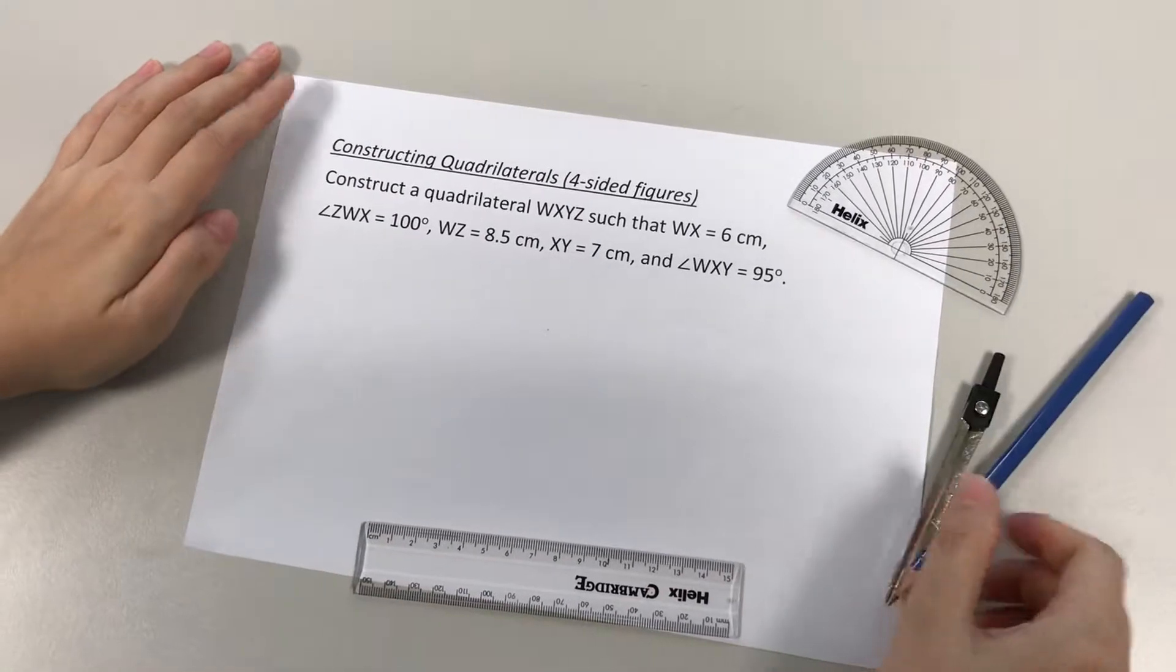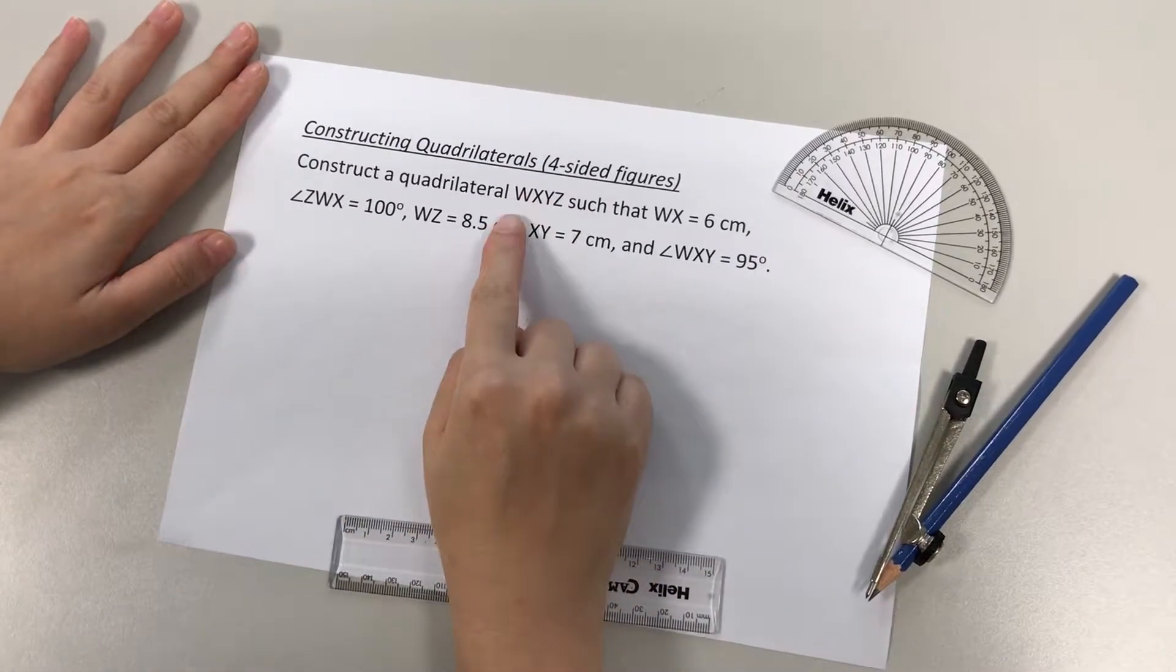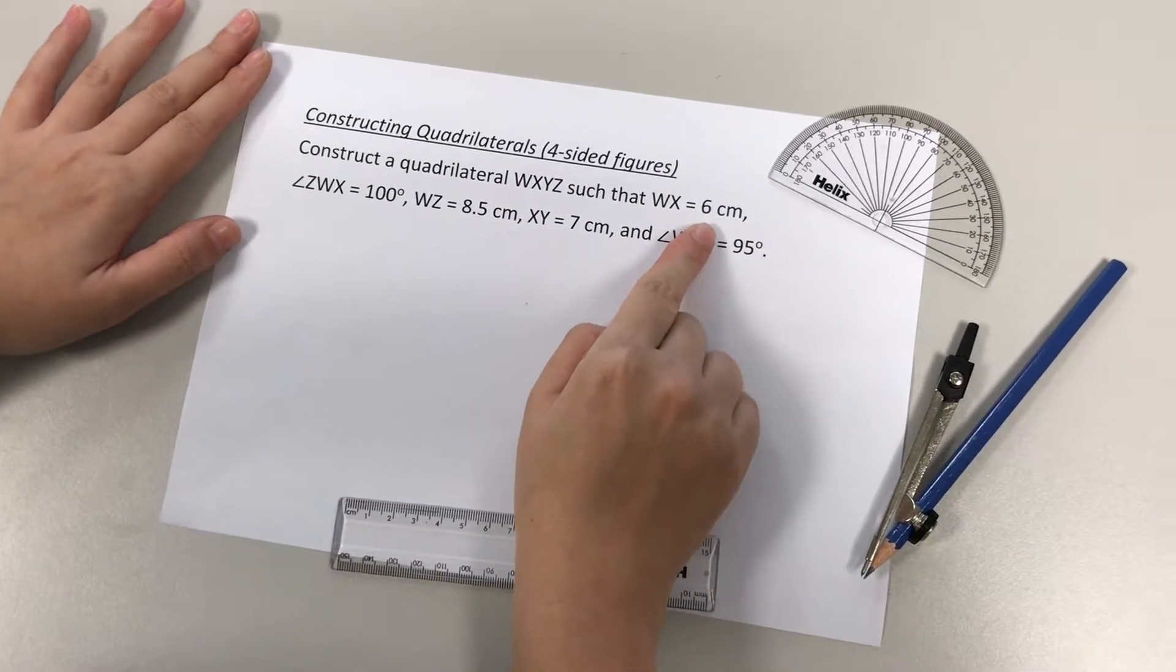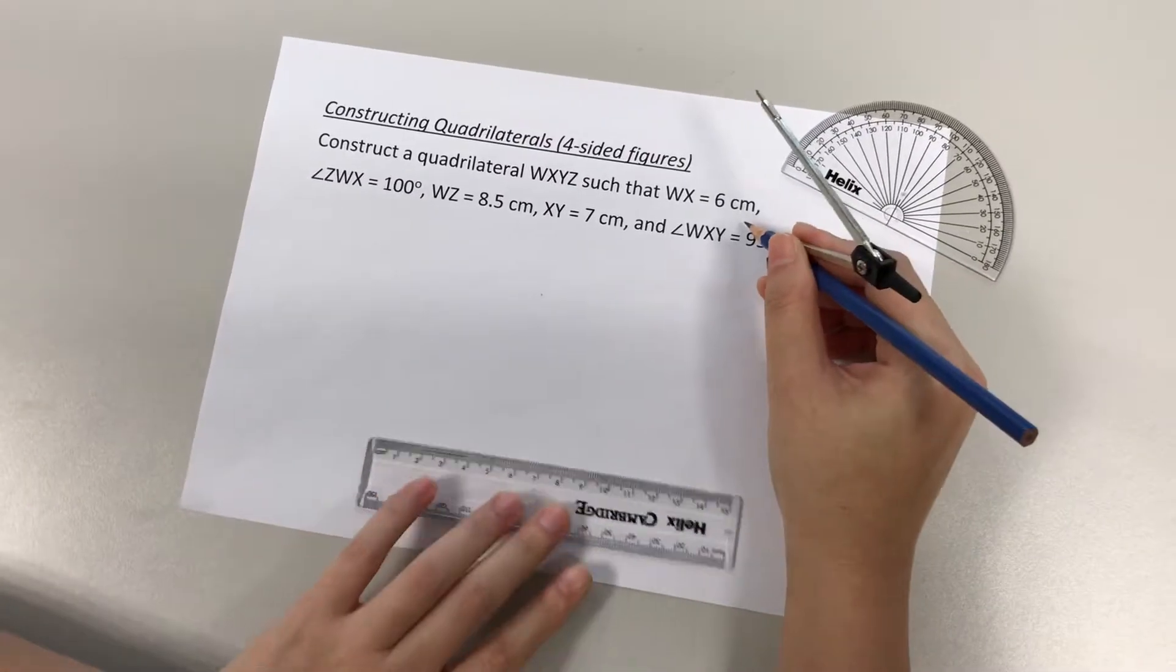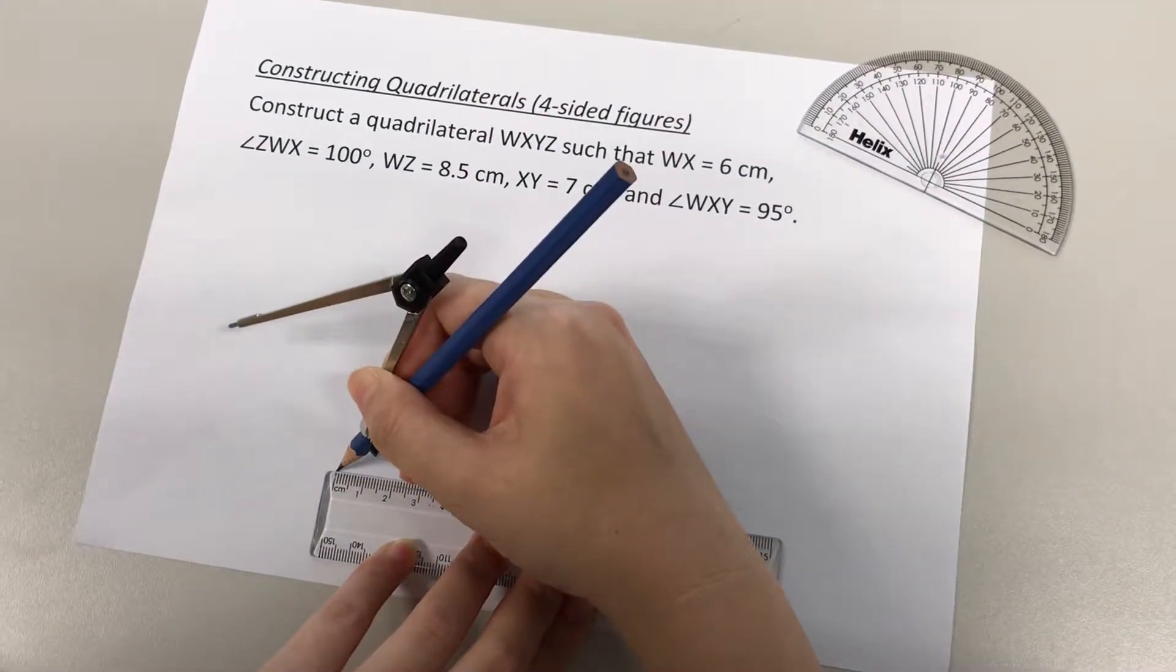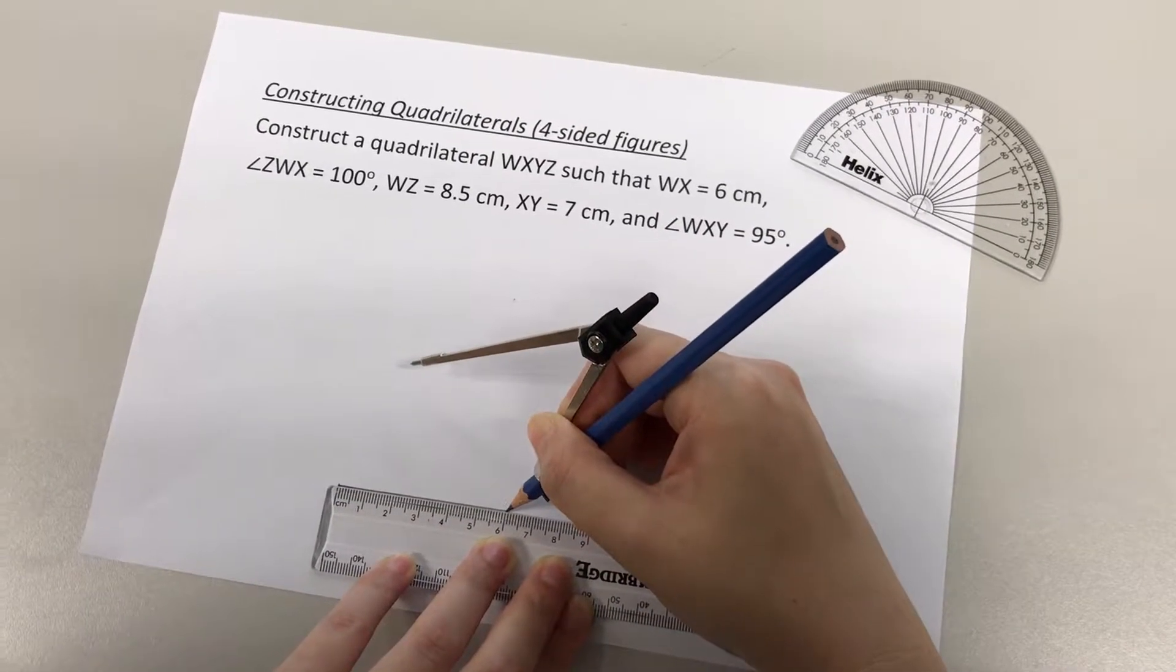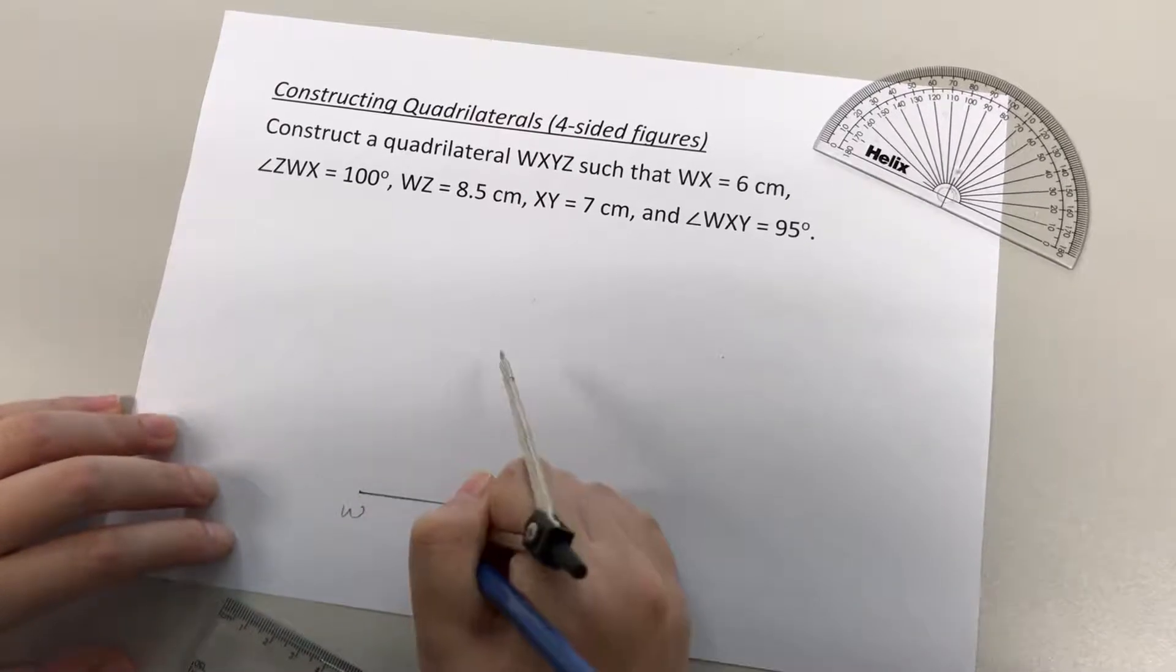Alright, so here, let's start off with the first information that we are given. We are supposed to draw WXYZ, and I'm given that WX equals 6 cm. So I always start with drawing a straight line with my ruler based on the first length that is given. So WX 6 cm. Alright, so I'm labeling it WX 6 cm.